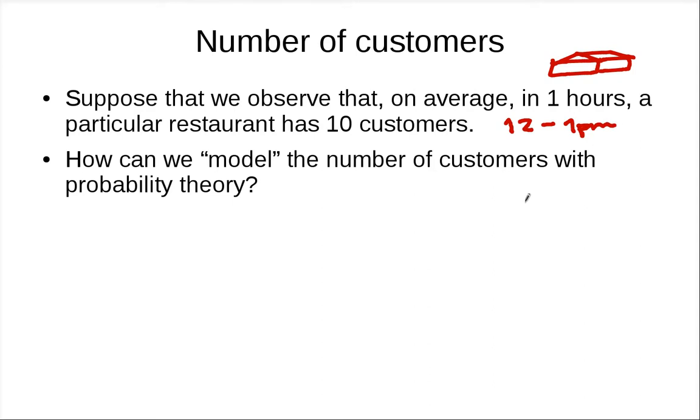Assume we look at that every day. How can we model this number of customers coming to the restaurant with probability theory? You may wonder why do we want to model this, and what exactly is the model?